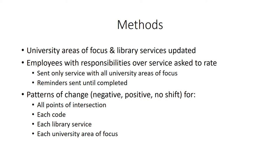As an analysis, we examined patterns of change so that negative shifts were considered to be instances where the intersection of a library service and university area of focus decreased in the amount of data collected, used, or shared. A positive shift was just the opposite, where the intersection indicated an increase in data collection, sharing, and use. No shift is where the same rating was given in 2019 as was given in 2013. We did this for all points of intersection for each code, each library service, and each university area of focus.